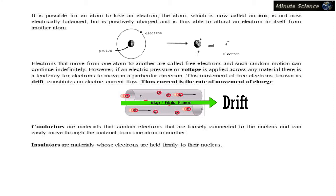Conductors are materials that contain electrons that are loosely connected to the nucleus and can easily move through the material from one atom to another. Insulators are materials whose electrons are held firmly to their nucleus.